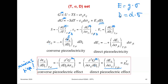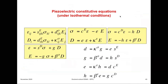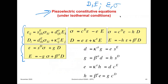We have as electric variables D and E, and as mechanical variables epsilon and sigma. We can write four different sets of equations taking only electrical and mechanical variables — these are called piezoelectric constitutive equations — all given under isothermal conditions. The first set is the one we just discussed. The relationships between these different piezoelectric coefficients — d, e, g, h — are given here.